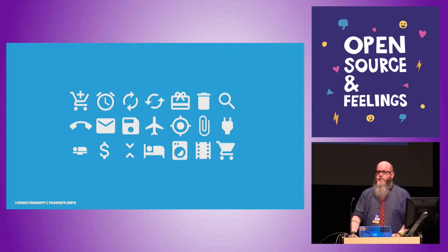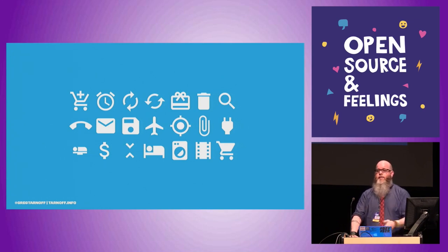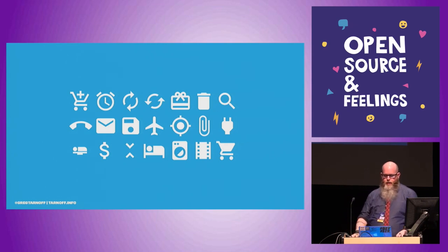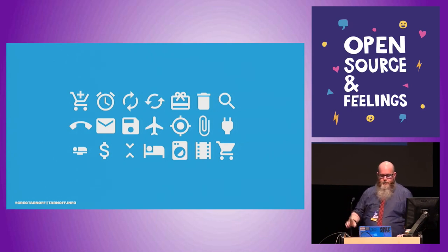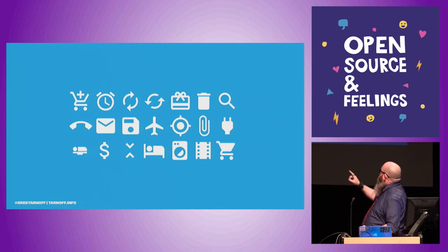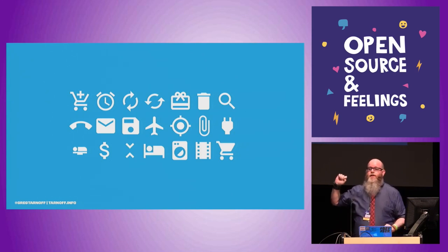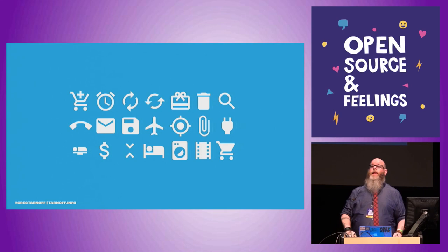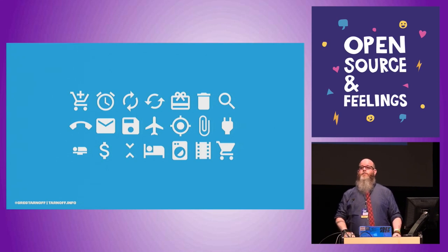One of these icons is 'reset' and one is 'refresh' — they're both in the top row. Can you tell me which one is which? I don't know, and I put them in there. The one underneath the phone icon means your airplane seat can recline. Who knew?